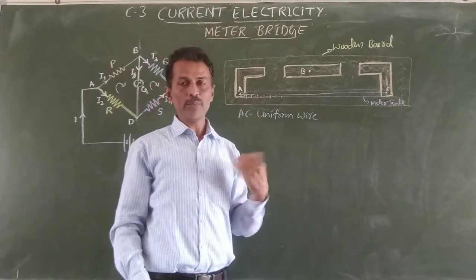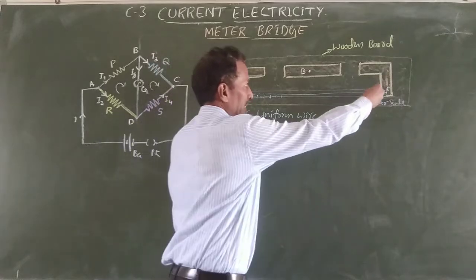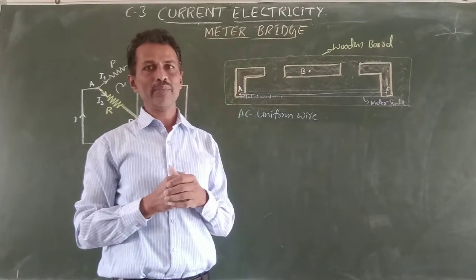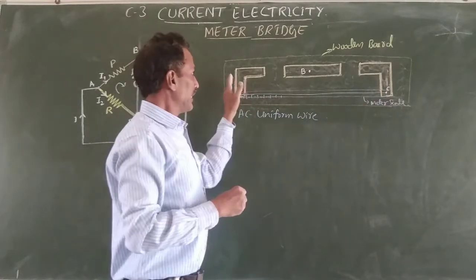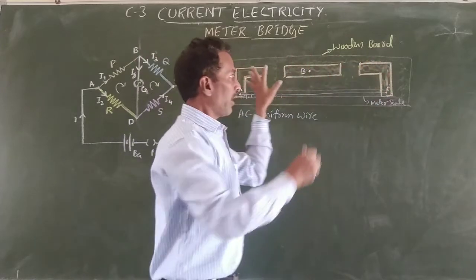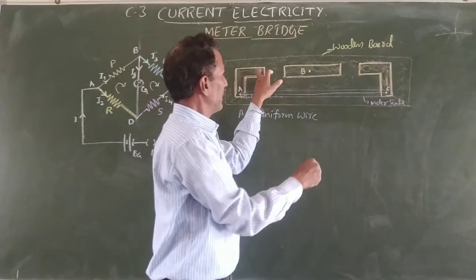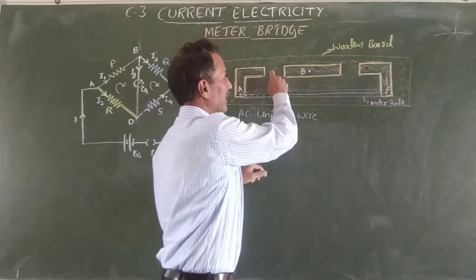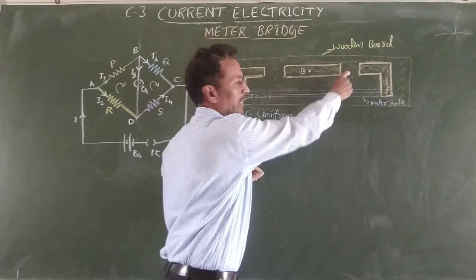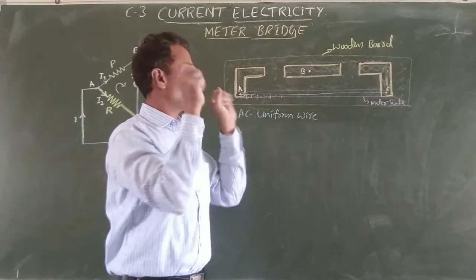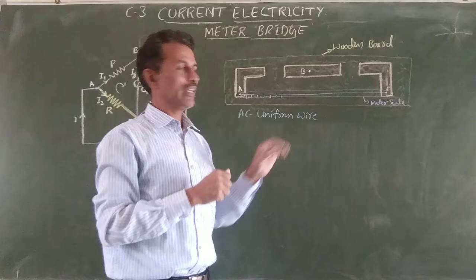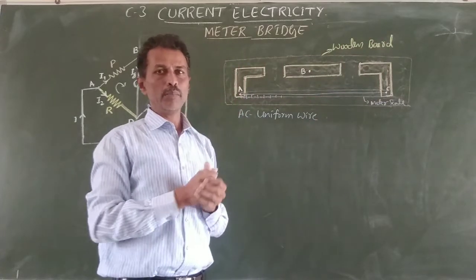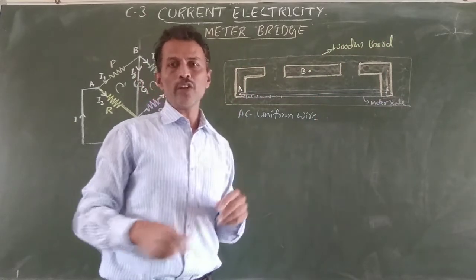The wire spans a distance of 1 meter. The metallic strips are fixed such that they create two gaps in between — this is the first gap and this is the second gap. This is the equipment device for the meter bridge.